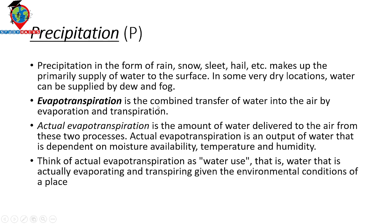Evapotranspiration is the combined transfer of water into the air by evaporation and transpiration. Transpiration is the process by which water is released by trees. Actual evapotranspiration is the amount of water delivered to the air from these two processes, and it depends on moisture availability, temperature, and humidity — essentially the water that is actually evaporating and transpiring given the environmental conditions of a plant.